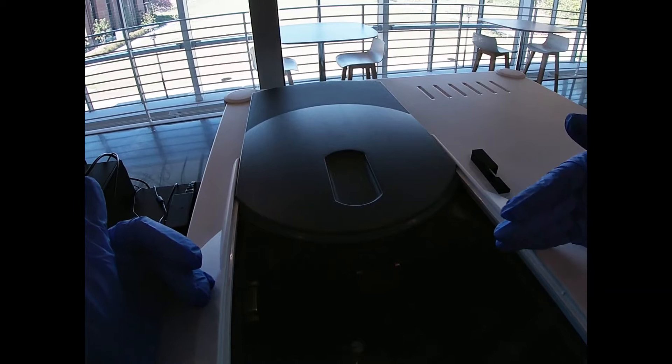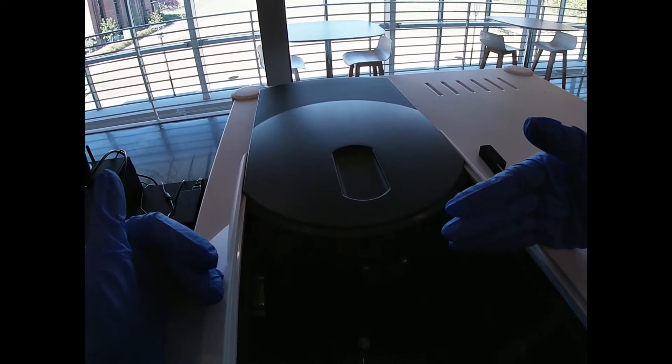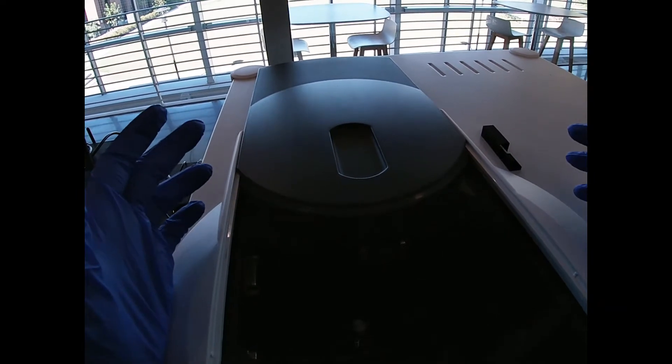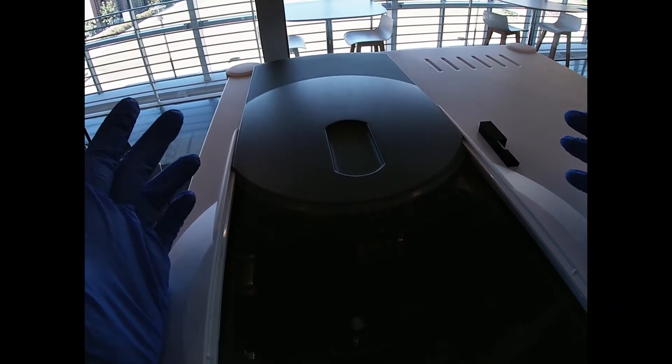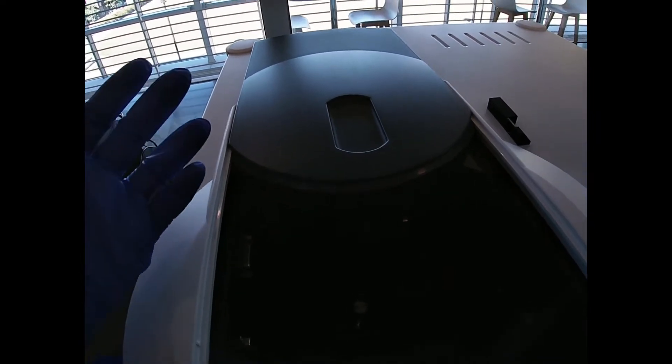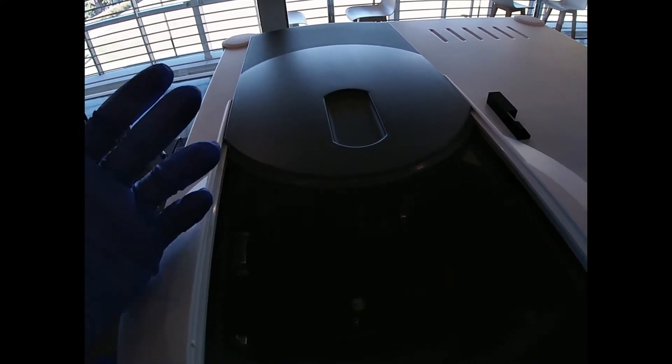Basically what happens is you've got an excitation beam that comes in. It strikes the sample, excites the quinine molecules. When they're excited, they gain energy. When they relax, they release that energy as fluorescence, so they emit light at a different wavelength.